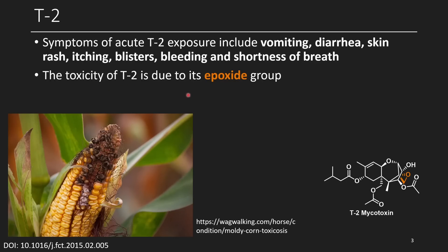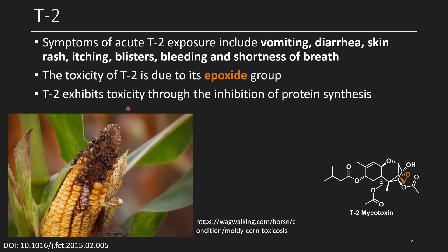The toxicity of T2 is due to its epoxide group. Looking at the T2 mycotoxin structure itself, it has an interesting scaffold: a cyclohexene group, a couple of acetate groups, an elongated ester group, a bicyclic system, and a hydroxy group sticking off. There are a lot of potential interaction points, and its toxicity comes through the inhibition of protein synthesis, which creates all sorts of problems for your cells.